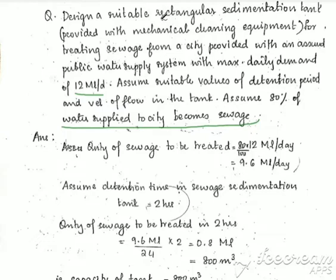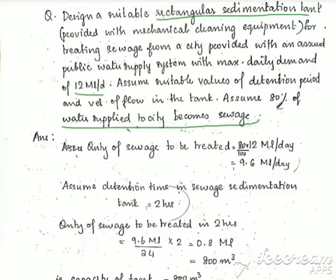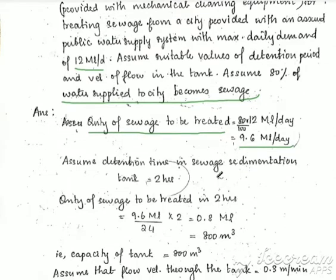A rectangular sedimentation tank. The given data: maximum daily demand is 12 million liters per day. That means 80% of 12 million liters per day becomes sewage. So the quantity of sewage to be treated is 80% of 12 million liters per day.